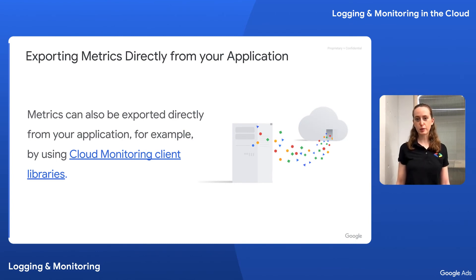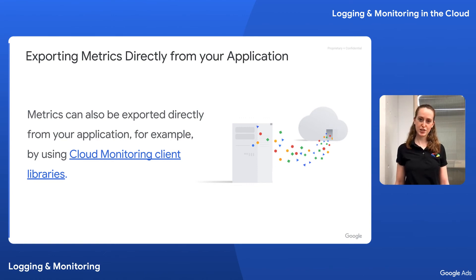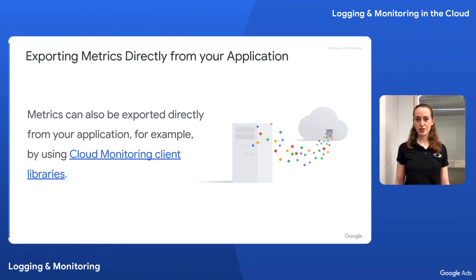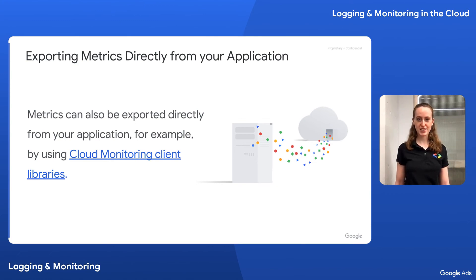As an alternative to log-based metrics, you can export metrics directly from your application. For example, Google Cloud Monitoring provides client libraries to integrate metrics into your application code that can be instantiated and exported at once, which can be more efficient than extracting them or building them on top of the application logs. This video series focuses on metrics that are built on top of exported logs or that are included in the logs themselves, but creating and exporting metrics directly is another option to consider.